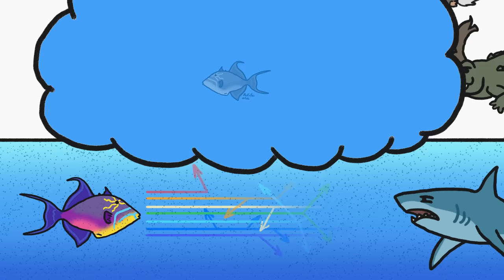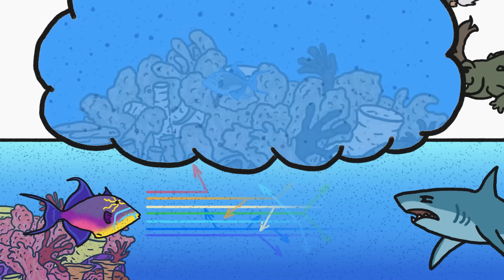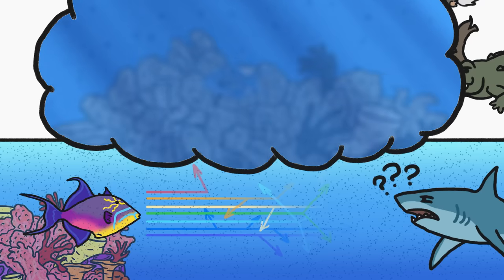Water is also full of particles that scatter light, which creates a kind of visual haze that dulls colors even further. Add in a background of mottled coral, some flickery underwater shadows, and the pretty poor visual resolution of most underwater predators, and that brightly colored fish has become basically invisible.